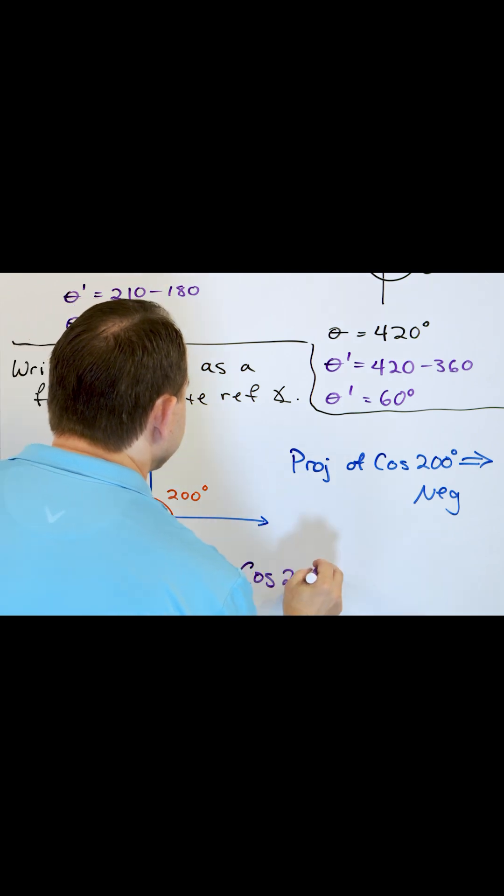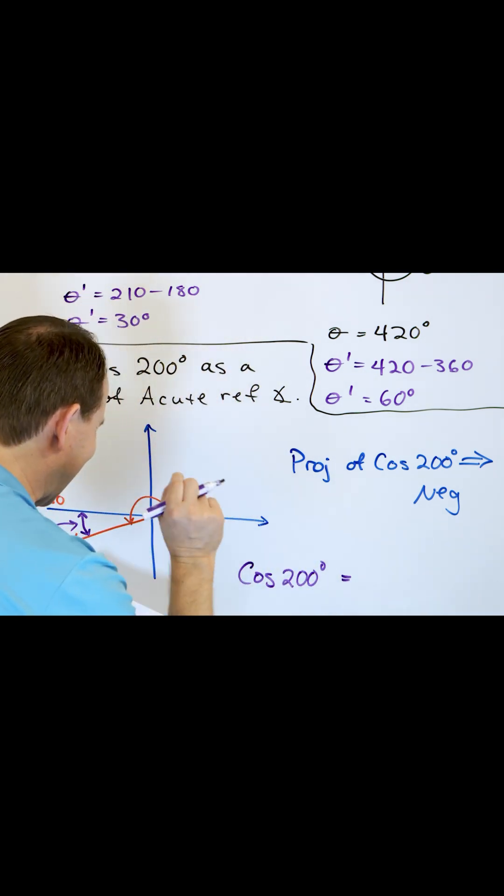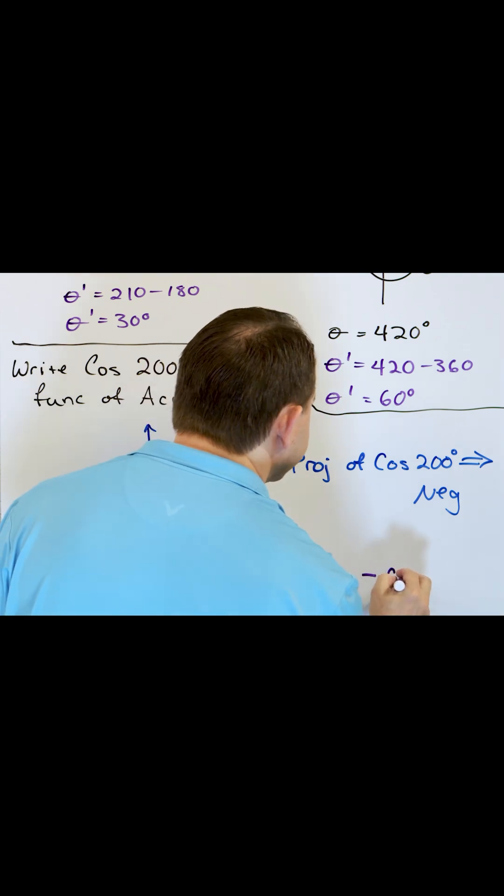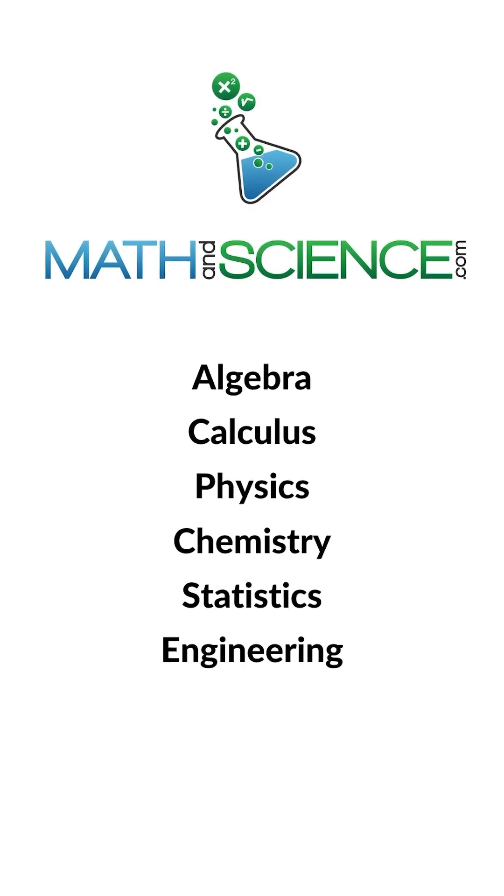Write cosine of 200 degrees as a function of the acute reference angle. We now know the reference angle is 20 degrees. So what we're basically saying is that cosine of 200 degrees is exactly the same as negative cosine of 20 degrees.